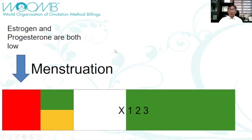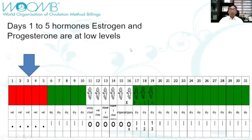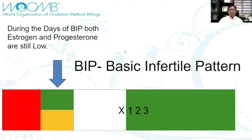Now, what is happening after menstruation? Let us try to check the actual chart. If you look at the actual chart, days 1 to 5 are the days of menstrual bleeding. Take note that both estrogen and progesterone will be at low levels. Immediately after menstruation, the cervix will be closed. Again, there will be no ovarian activity. During the days of BIP, both estrogen and progesterone would be very low.